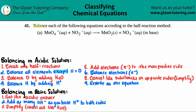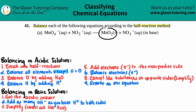Number 41: balance each of the following equations according to the half reaction method. For letter A, we have MnO4⁻ plus nitrite (NO2⁻), which yields MnO2 solid plus nitrate (NO3⁻), and we have to do this all in a basic solution.